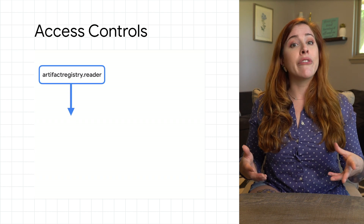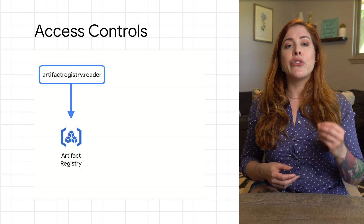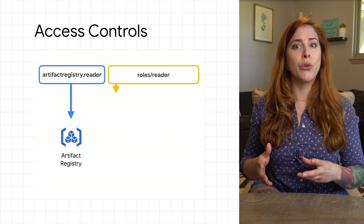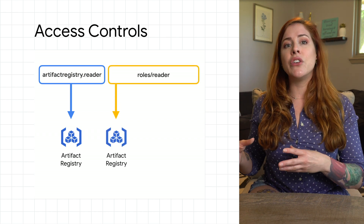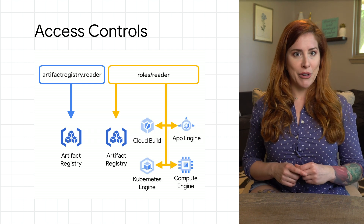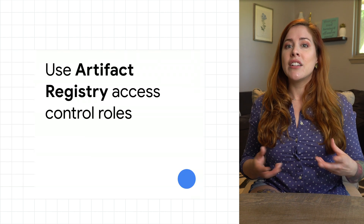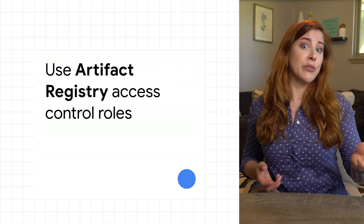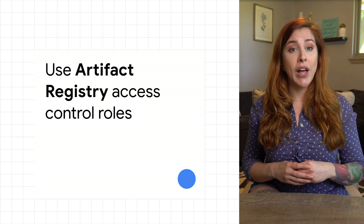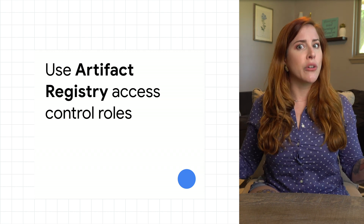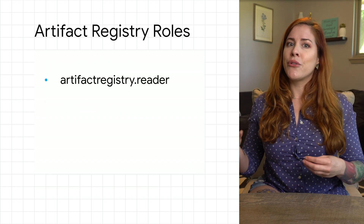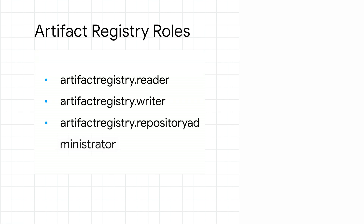For example, the Artifact Registry Reader role allows a user to view and get artifacts just from a specific project's repositories, whereas the roles/reader role allows a user to view and get any existing resources and data from all cloud components of the project. To grant a permission for a user, you grant a role that includes that permission. Where appropriate, you should use the Artifact Registry roles — reader, writer, repository administrator, and administrator — to control access to your repositories rather than those project-wide roles.